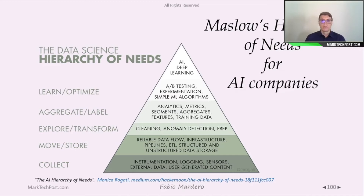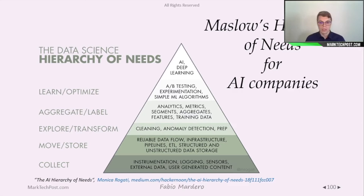Let's look at the Maslow hierarchy of needs for AI companies. At the bottom we have logging, sensors, external data, and user-generated content — this is the collection of data. We need data to gain insights from the business and develop machine learning models. Then we need to store this data with some sort of infrastructure: pipelines, ETL, data storage, and so on.